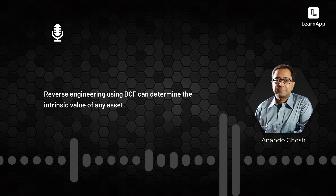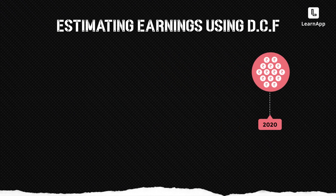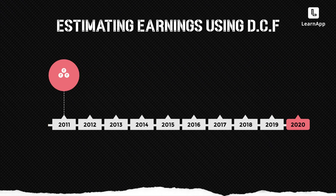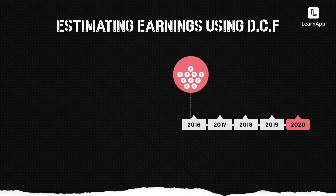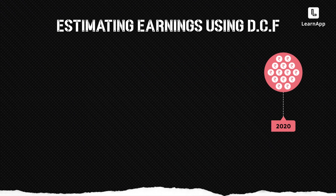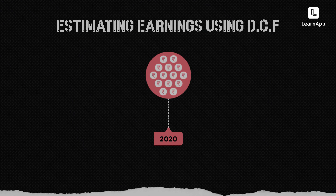If you take the share price of a company at any given point in time and do a reverse engineering of the company's share price using a DCF, you can find out what kind of growth — especially earnings growth — the company's current stock market price is implying.